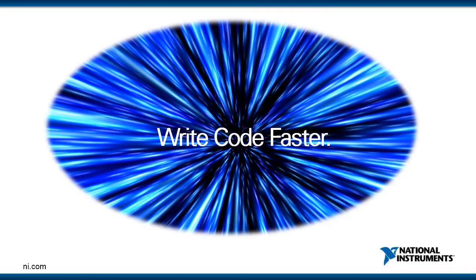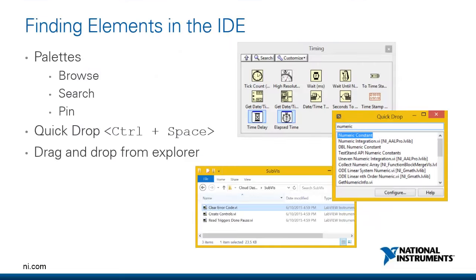First, let's talk about writing code faster. When you start with any blank VI, the first thing you're going to do is try to find elements in that integrated development environment to place on your block diagram or front panel. There are a few different ways to do this in LabVIEW: through the palettes, using Quick Drop keyboard shortcuts, or even dragging a file from Windows Explorer. For most of you, this is already an area where you have a pretty efficient workflow.